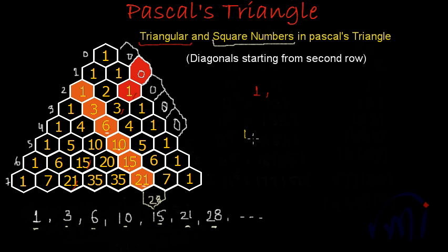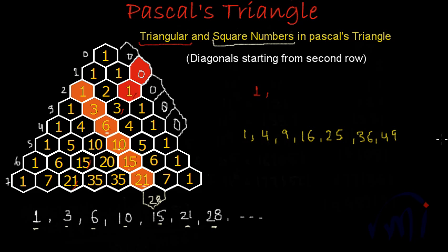The square numbers are: 1, 4, 9, 16, 25, 36, 49, and so on. That is 1 squared is 1, 2 squared is 4, 3 squared is 9, 4 squared is 16, 5 squared is 25, 6 squared is 36, and 7 squared is 49. This is the series of square numbers.